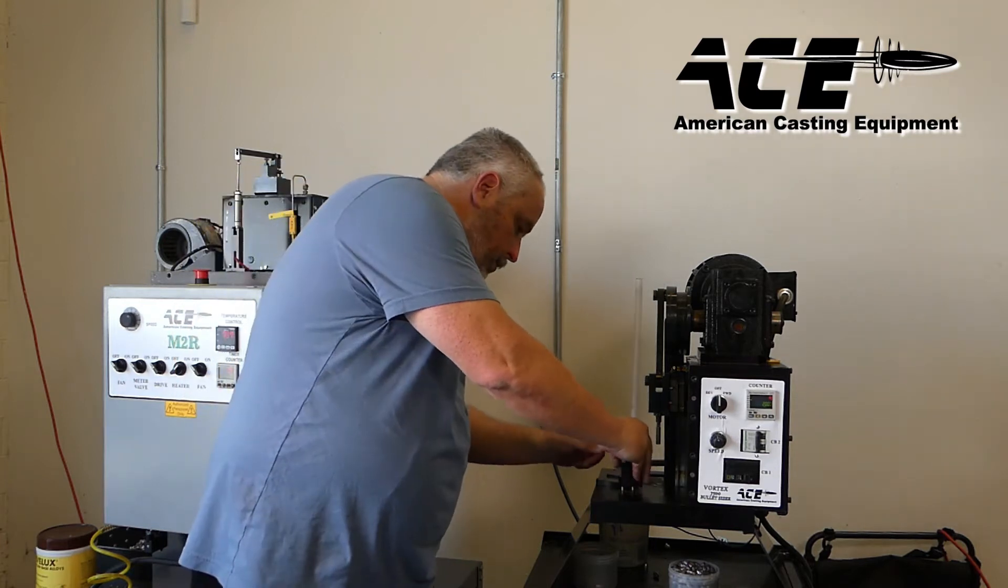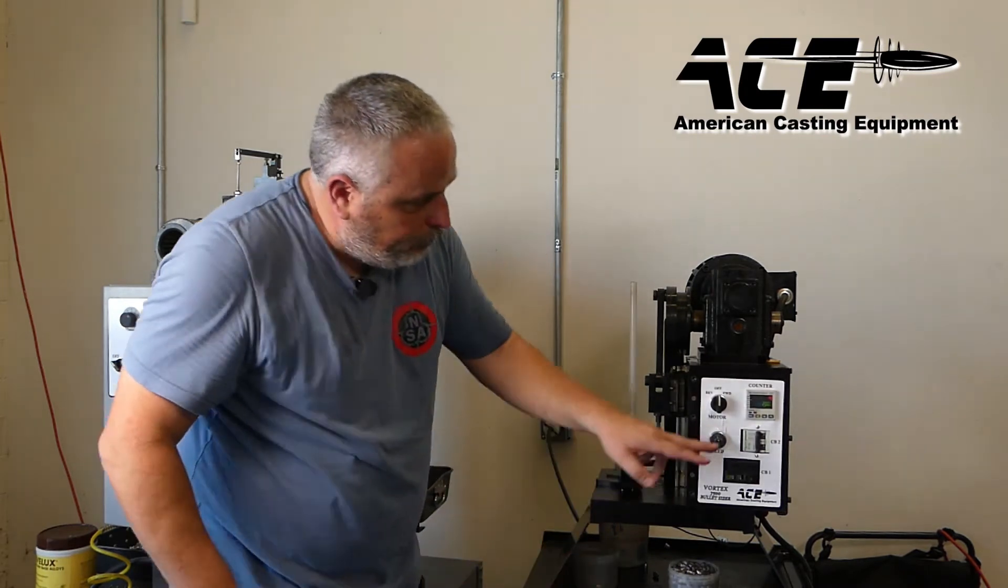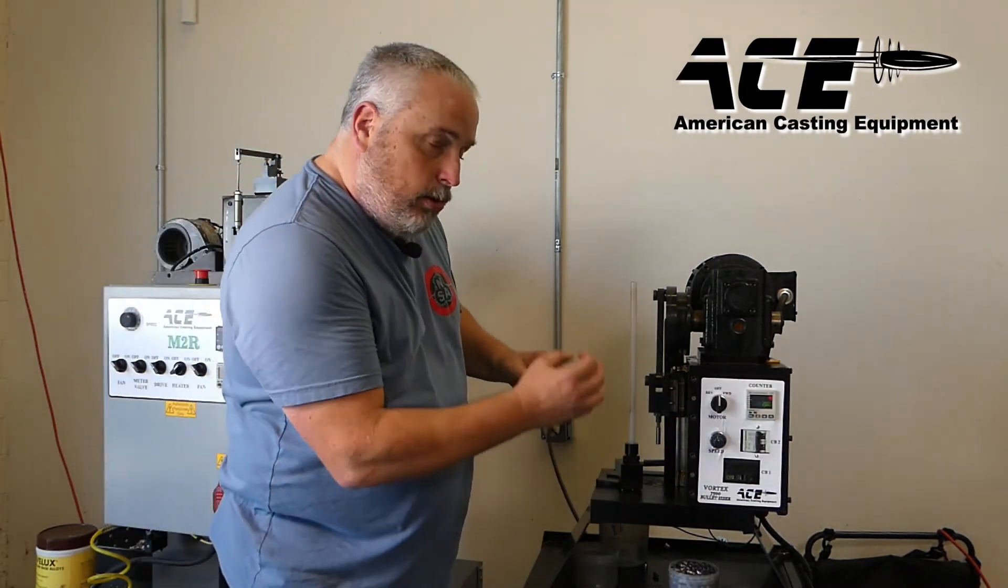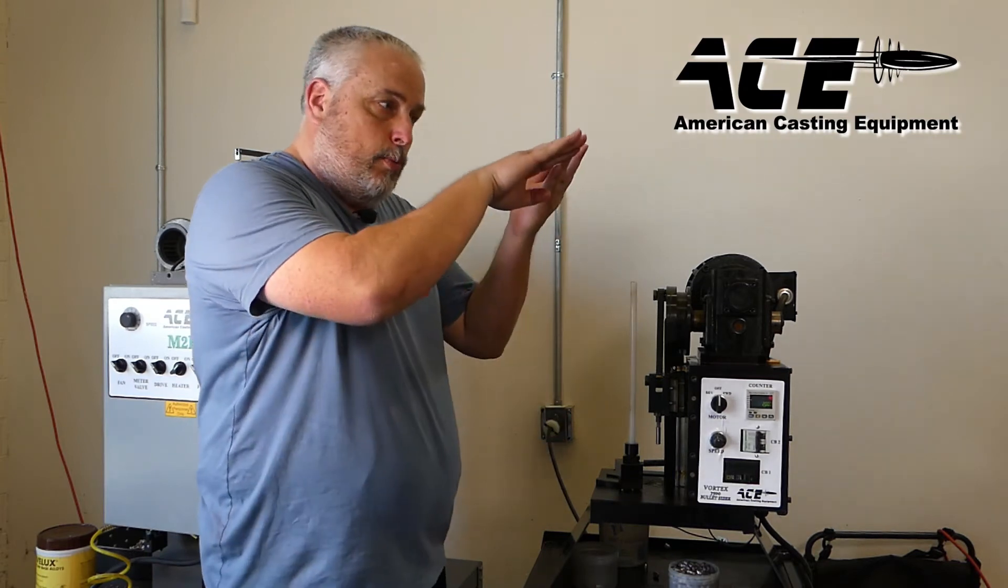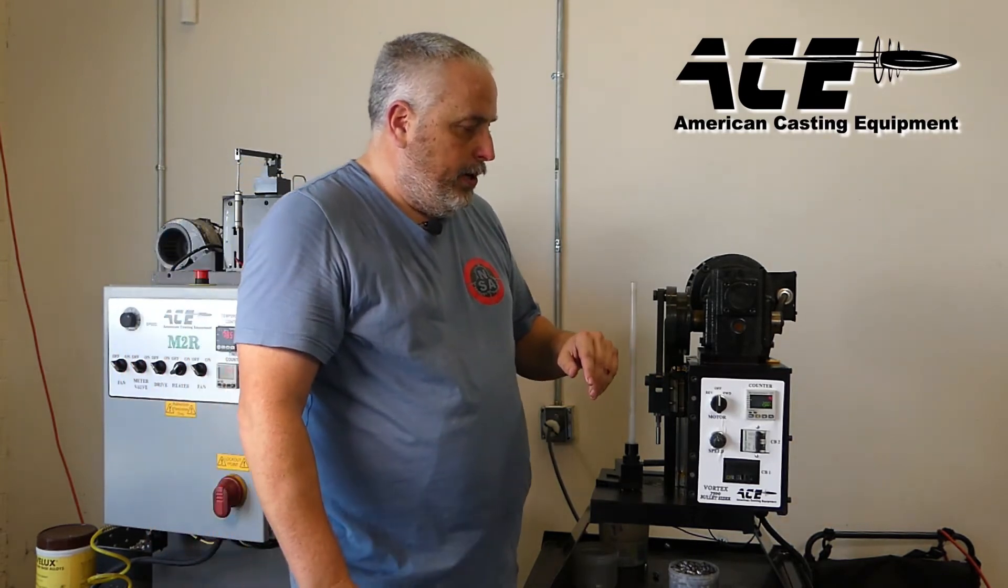And once this is on and sizing, they will drop out the bottom. It's got a counter and the counter doesn't check strokes. It actually has a little light sensor down below. So it actually waits for a bullet to pass by the light sensor. So you get a true count of how many bullets are going through there.